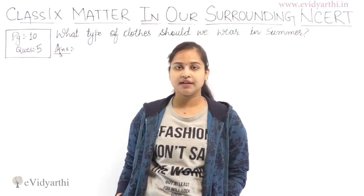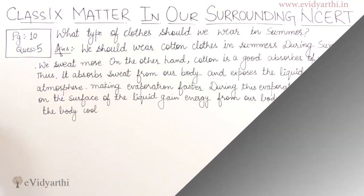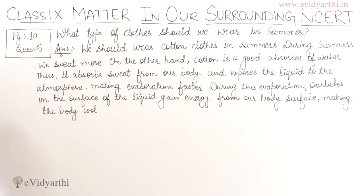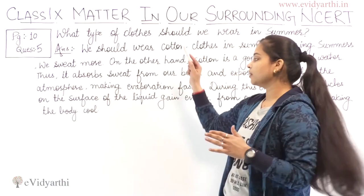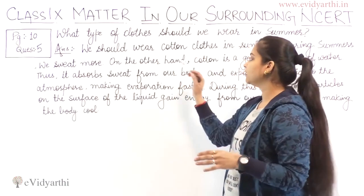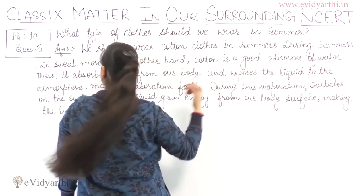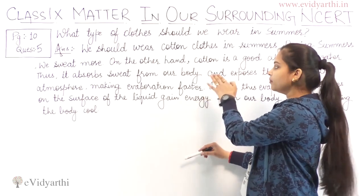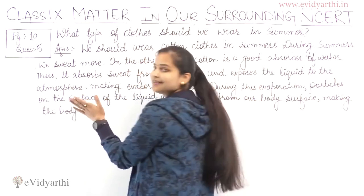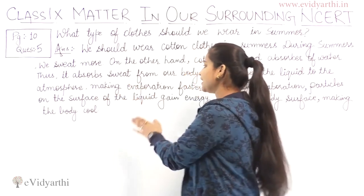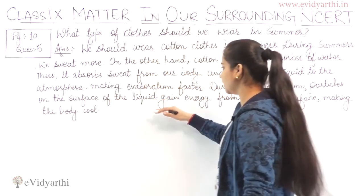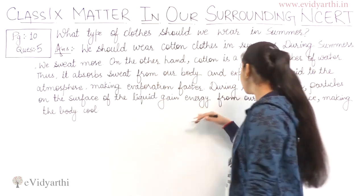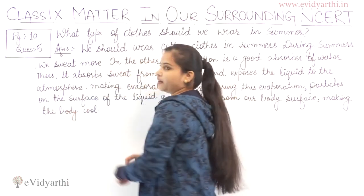Now you have to write in your notebook. This is how you represent your answer in the textbook or in the answer sheet. We should wear cotton clothes in summers. During summers we sweat more. Cotton is a good absorber of water. Thus it absorbs sweat from our body and exposes the liquid to the atmosphere, making evaporation faster. During this evaporation, particles on the surface of the liquid gain energy from our body surface, making the body cool.